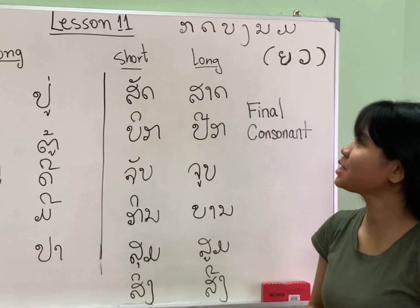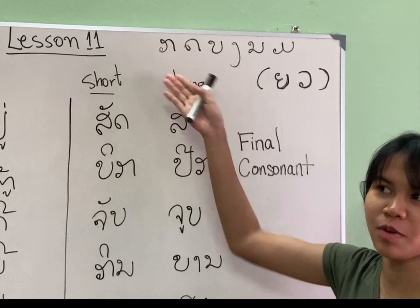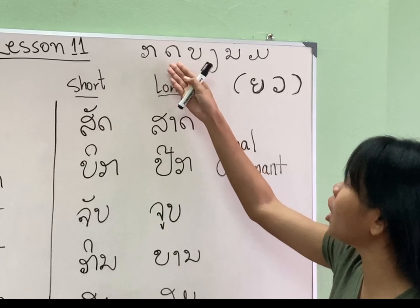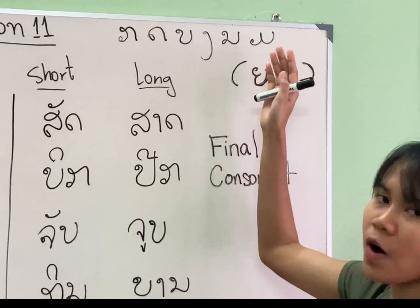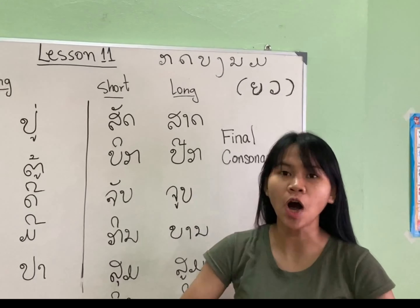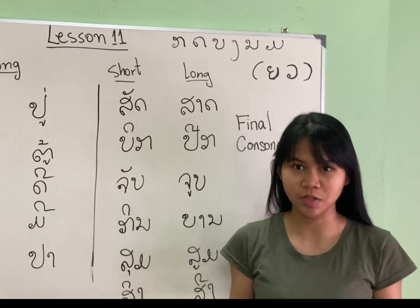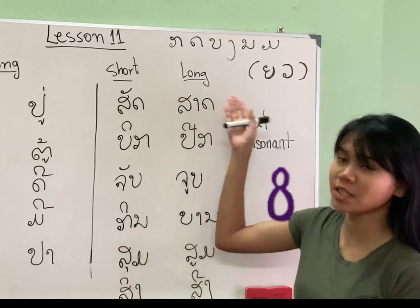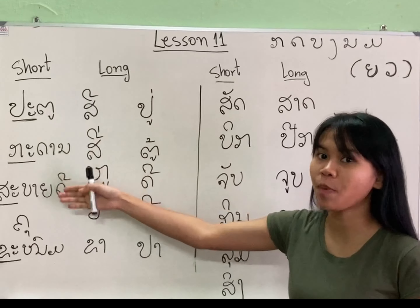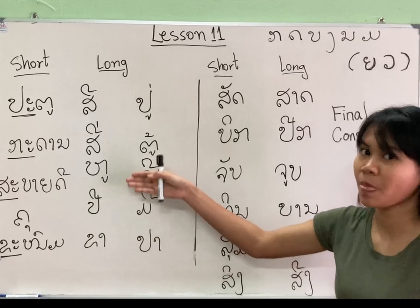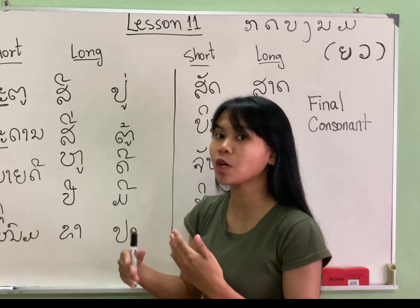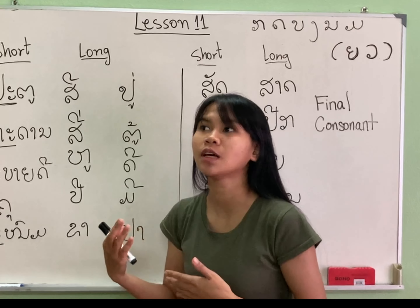Okay, so this is what we call the final consonant. We have: Go, Do, Go, Ngo, Mo, Ngo, Ngo, and Wo. So you cannot use all of the consonants as final consonants - it's just only eight of them. You're going to see here the open syllable and the closed syllable. We're going to see an example of how it's closed and how it's open.